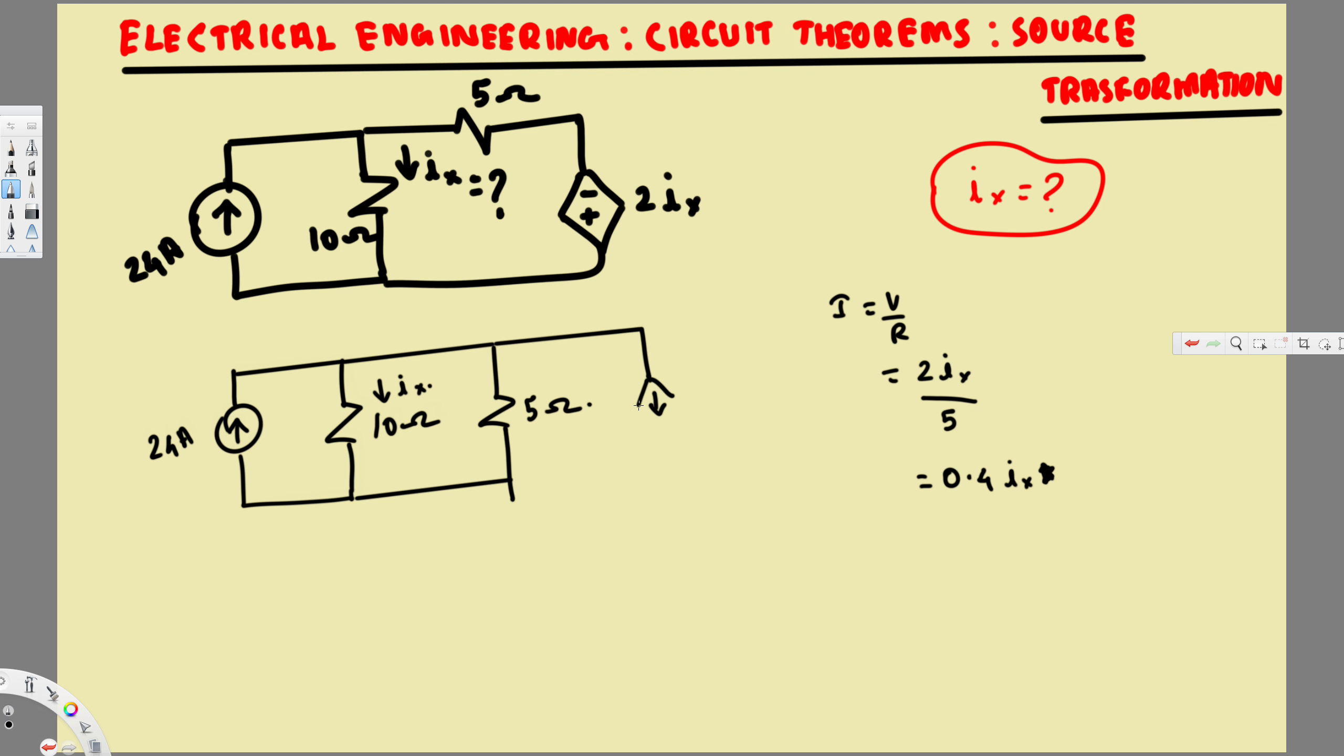This is 0.4Ix pointing downward, because we have plus right here, minus right here, okay. Then now let's see what we can do.